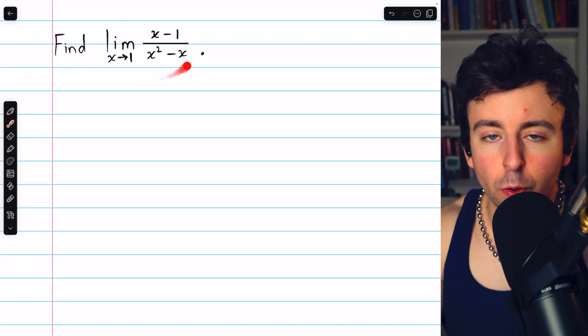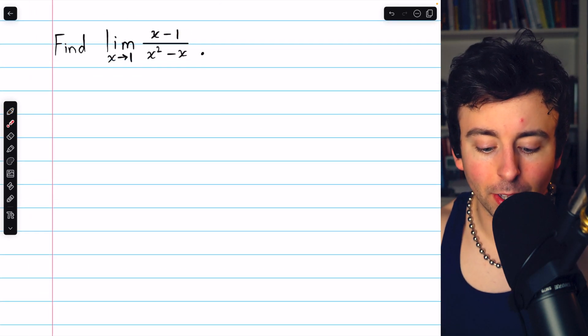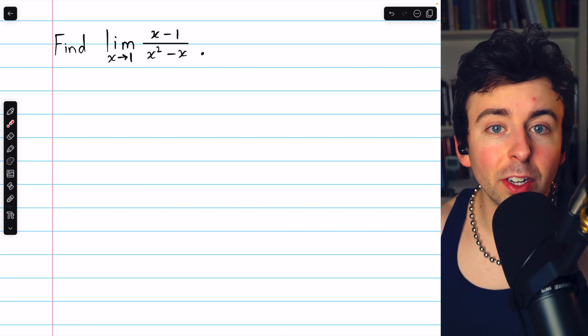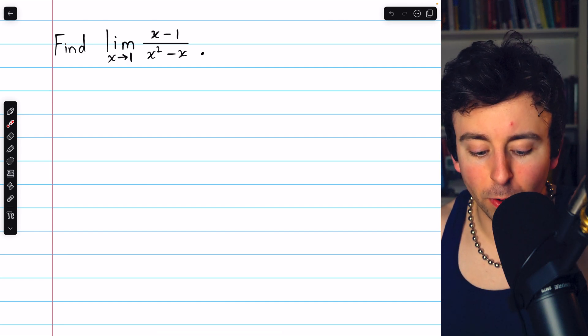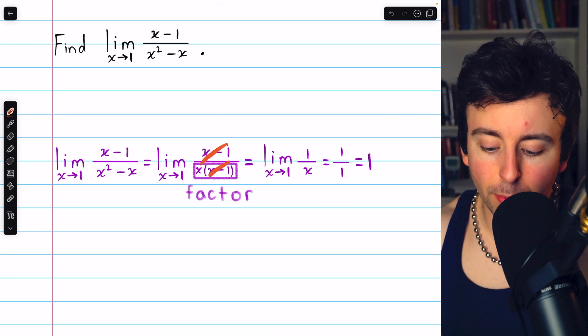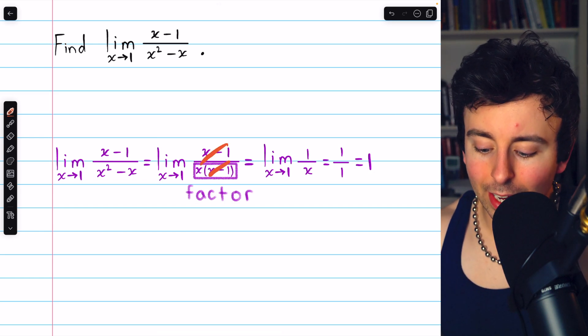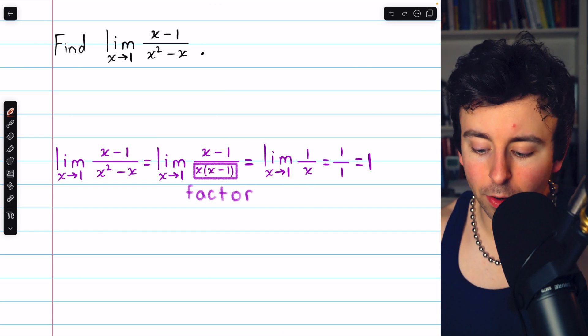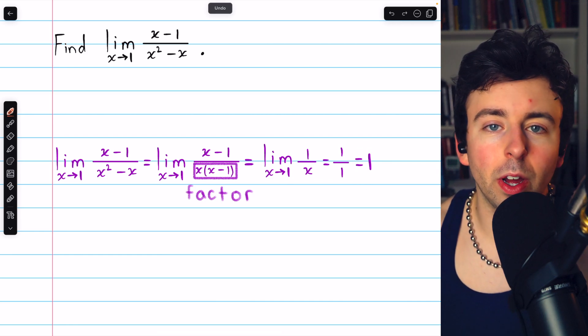Here's a similar one you can try on your own. Note in this example, x is approaching 1. Give it a try. I'll put the solution on screen now. In this example, we cross out x minus 1's so that we can plug in x equals 1 in the denominator, and end up getting positive 1 as our answer.